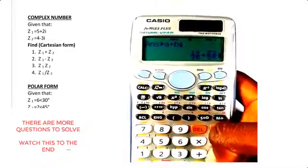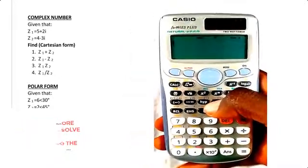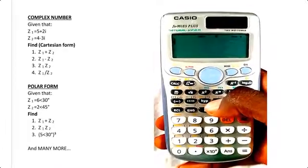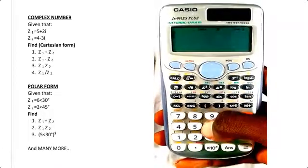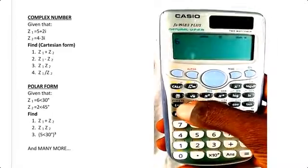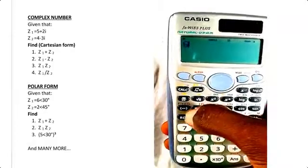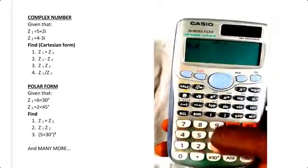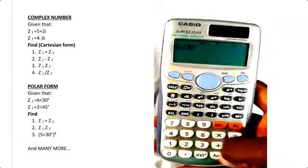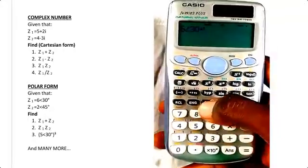That's your answer in Cartesian form. Now for a question in polar form: given the question, we have 6 angle 32 degrees—press Shift, angle, 32—plus 2 angle—Shift, angle—45 degrees.